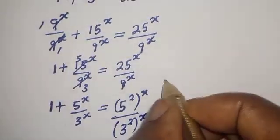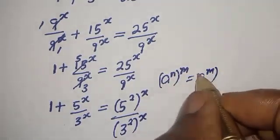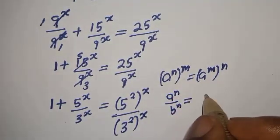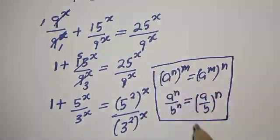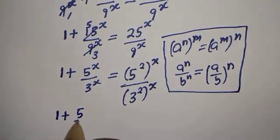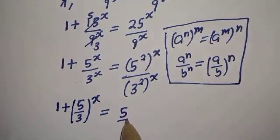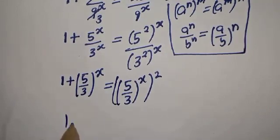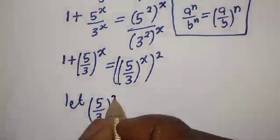Take note of this exponential rule: if you have A raised to the power N to the power of M, this is equal to A raised to the power M to the power of N. And if you have A raised to the power N over B raised to the power N, then this can be written as 1 plus 5 over 3 to the power of s, is equal to 5 over 3 to the power of 2s.